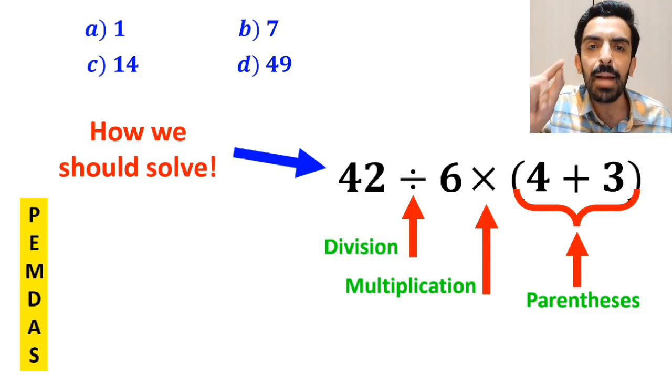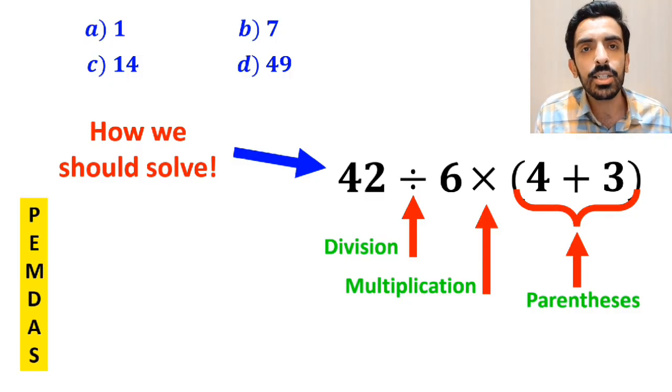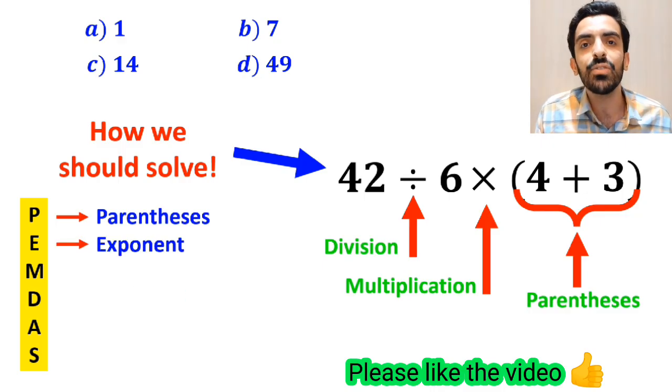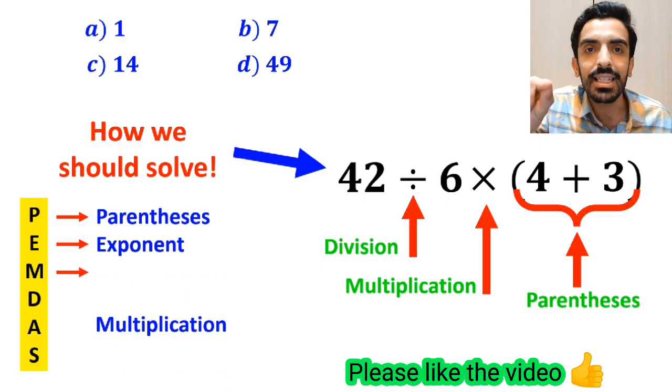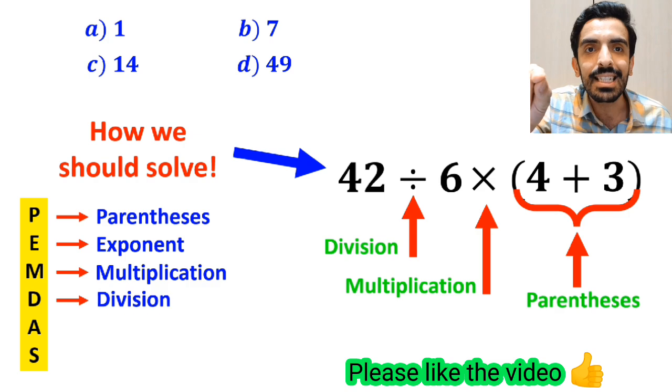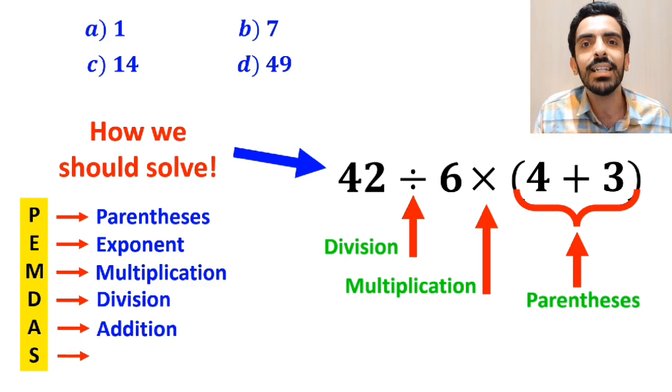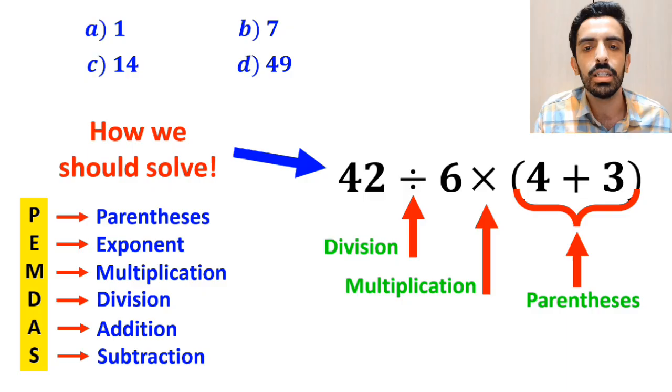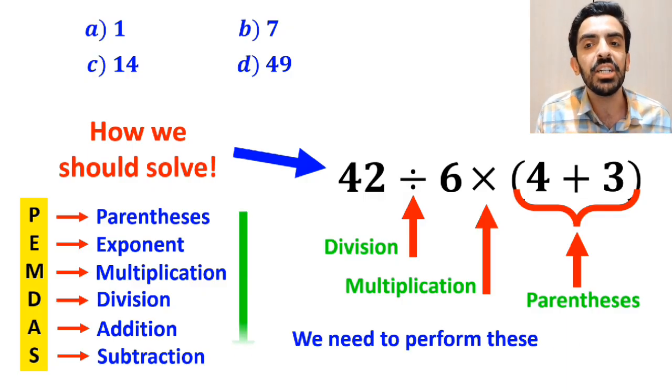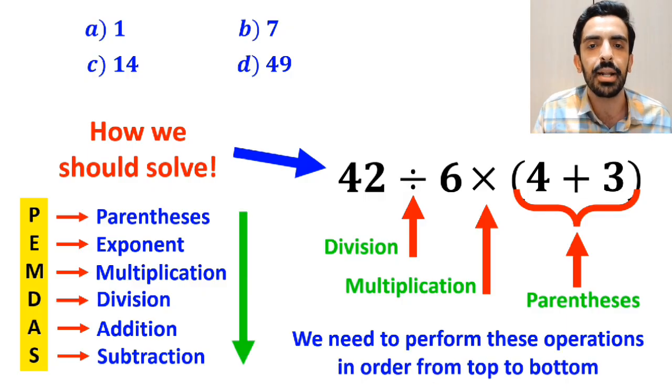To solve this question, we need to use the PEMDAS rule. P stands for parenthesis, E stands for exponent, M stands for multiplication, D stands for division, A stands for addition, and S stands for subtraction. We need to perform these operations in order from top to bottom.